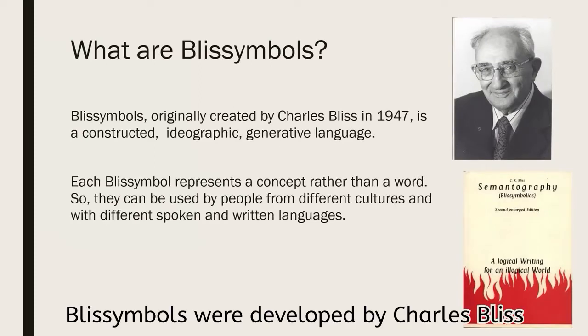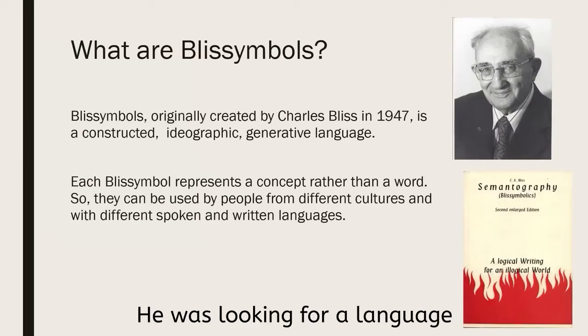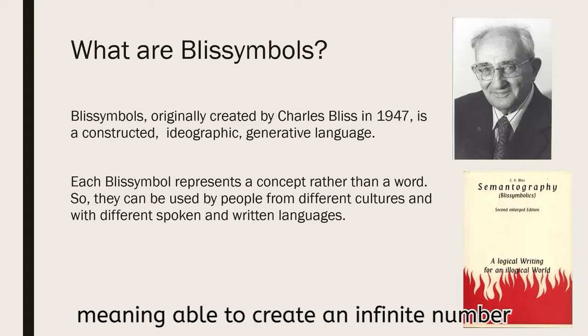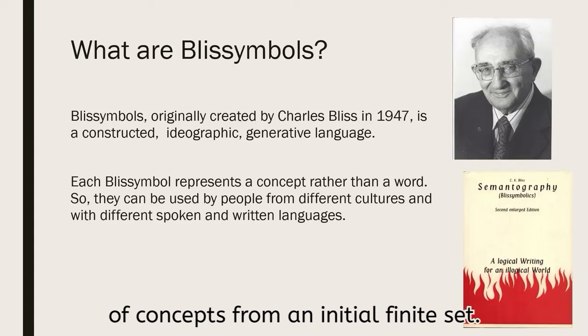Bliss symbols were developed by Charles Bliss in the 1940s. He was looking for a language that could be learned and used by anyone on earth. His language is constructed, meaning consciously devised instead of naturally evolved; ideographic, meaning graphic symbols that represent an idea or concept without phonology; and generative, meaning able to create an infinite number of concepts from an initial finite set.